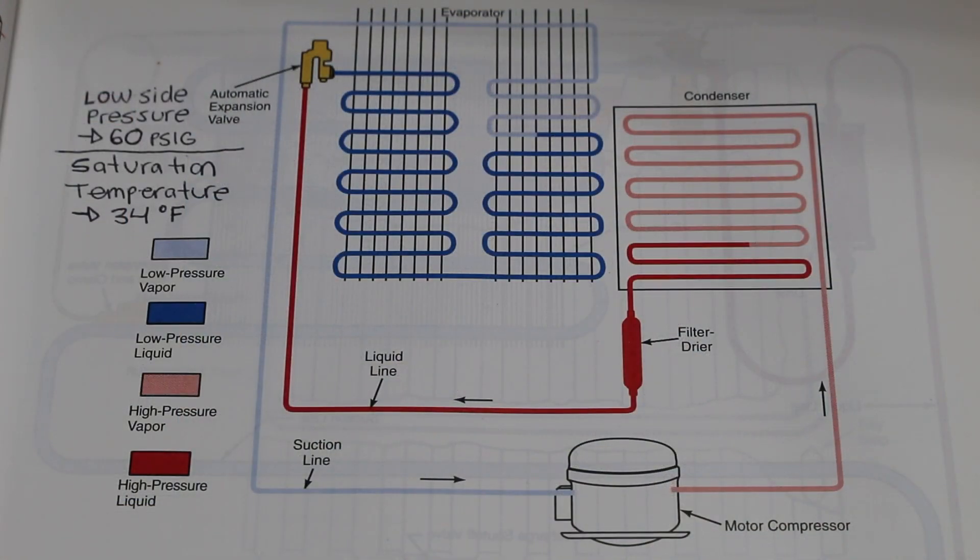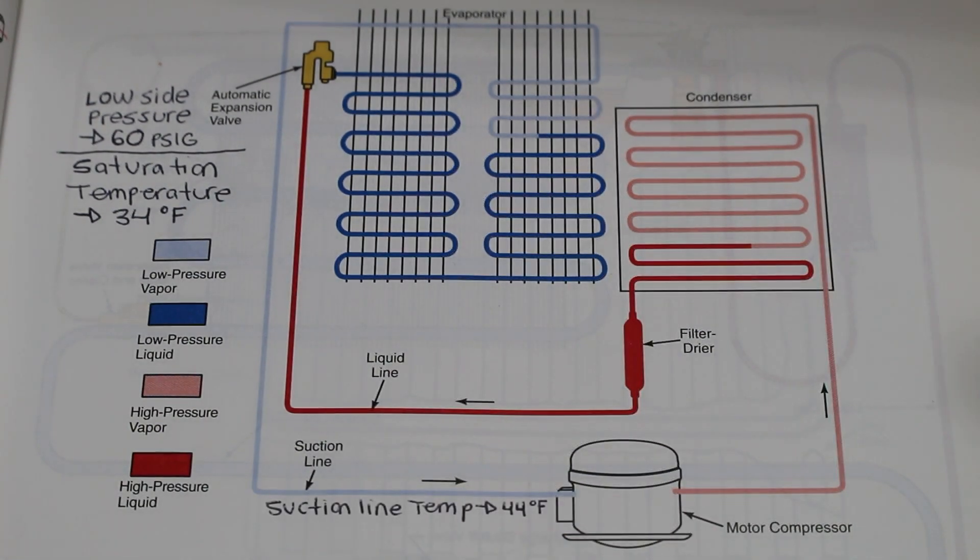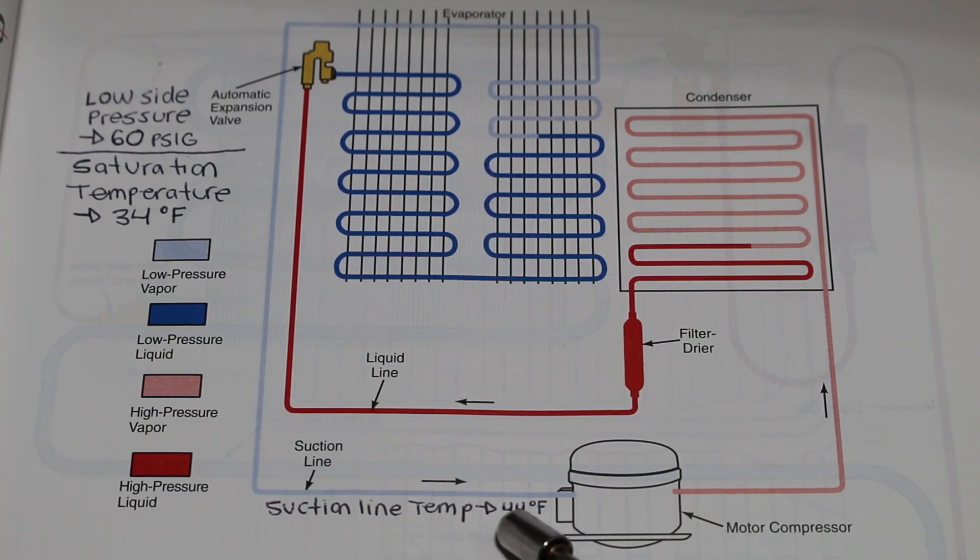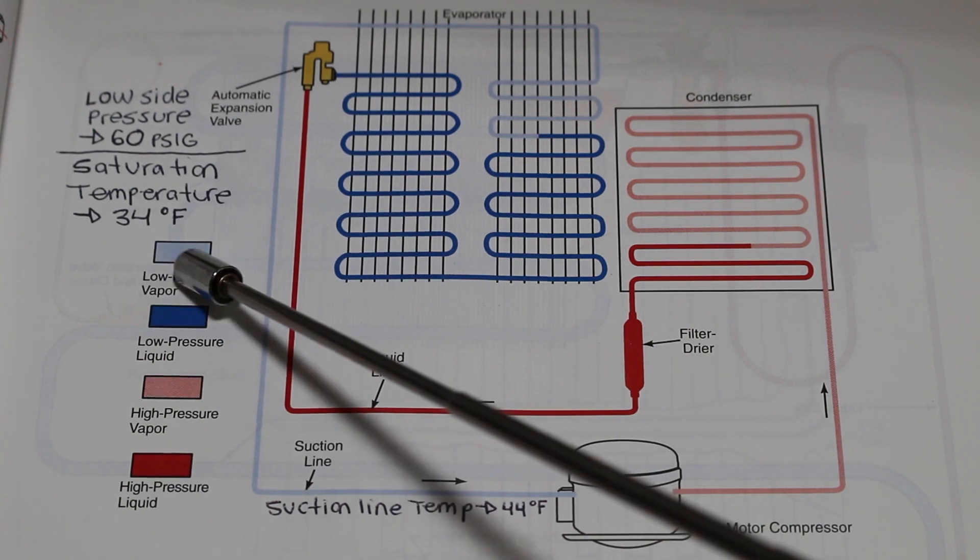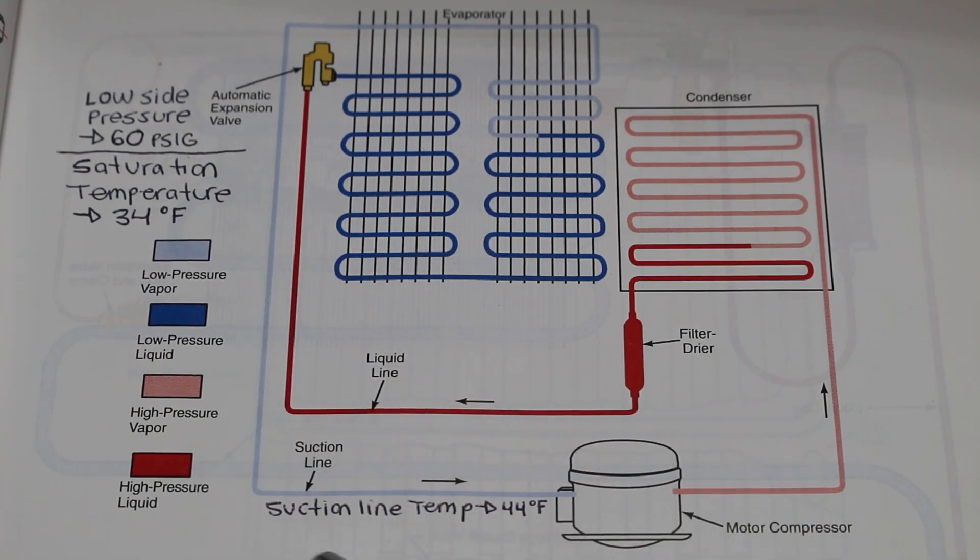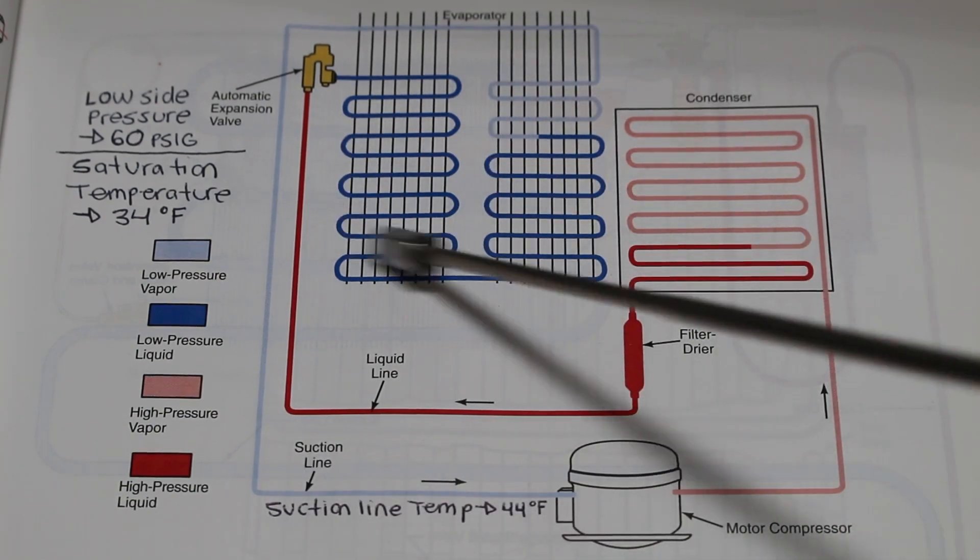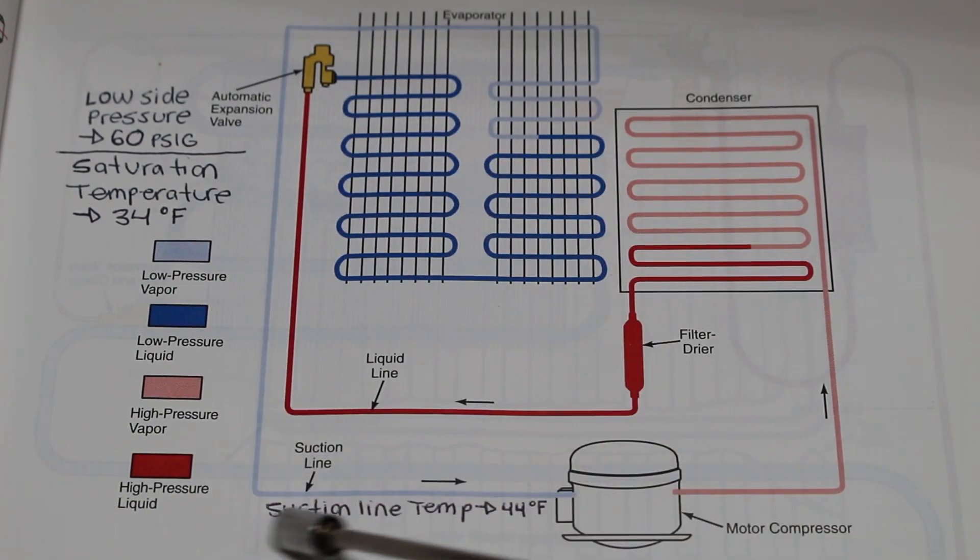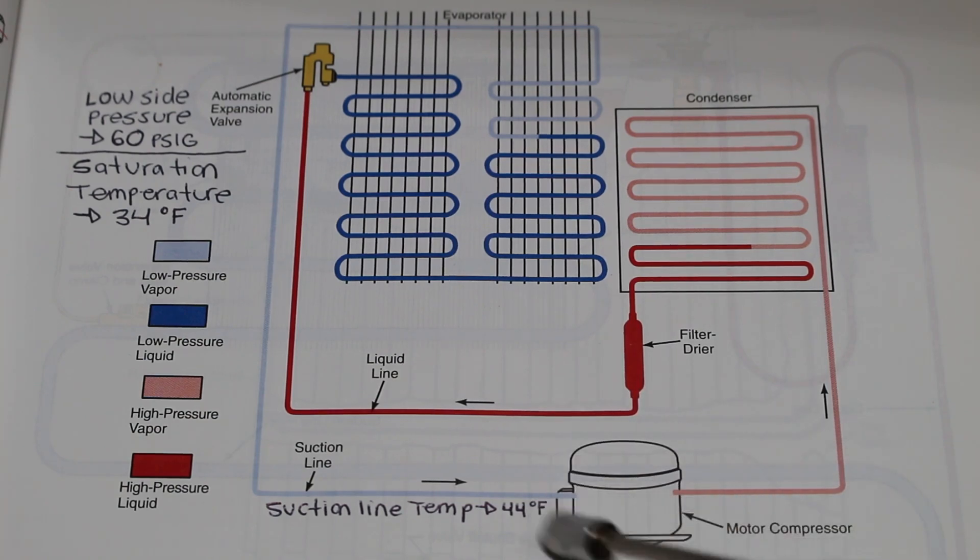Next, we can take our pipe clamp thermometer and take a temperature reading of our suction line. In this example, our suction line temperature is 44 degrees. Superheat is the difference between our saturation temperature and our suction line temperature. The suction line is the pipe leaving your evaporator and entering our compressor.